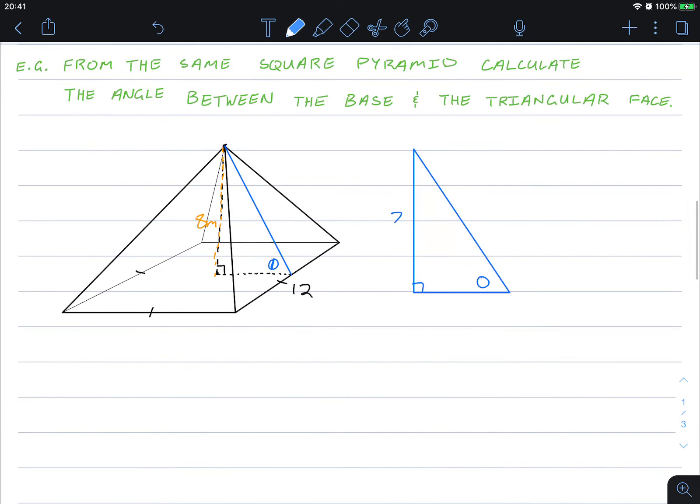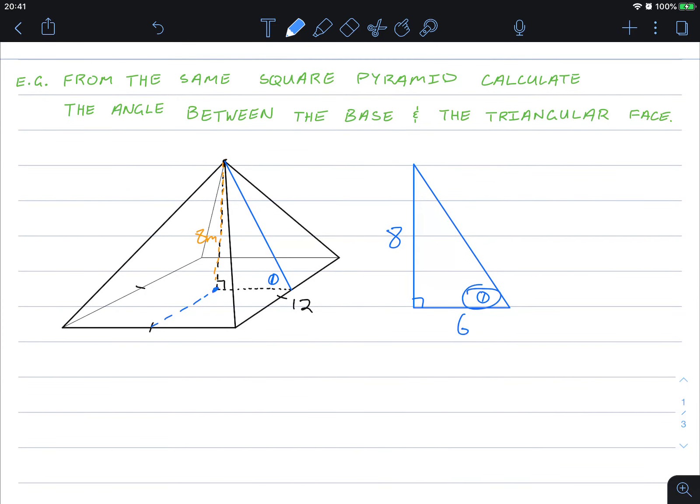And we know that this is 8. And because that's in the center, this length here is half of 12, which is 6. That's very simple. Now we can figure out what this angle is.